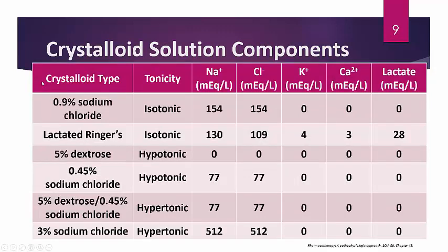Looking more closely at the composition of each solution: 0.9% sodium chloride contains 154 mEq/L of sodium and 154 mEq/L of chloride. 0.45% sodium chloride contains 77 mEq/L each. Since normal body sodium is 135–150 mEq/L, infusing more 0.45% NaCl could lower your patient's sodium concentration. Use 0.9% as your cutoff: above it is hypertonic, below it is hypotonic.